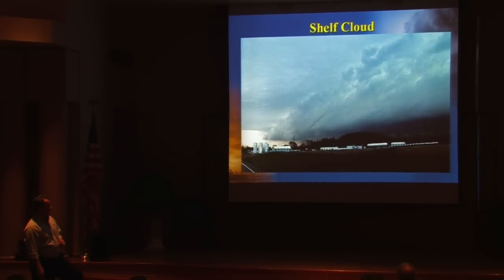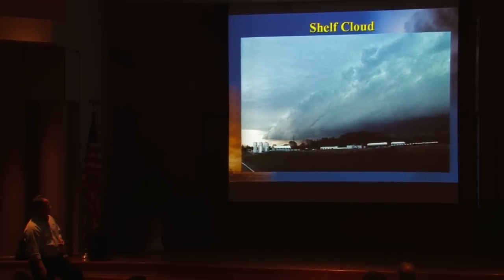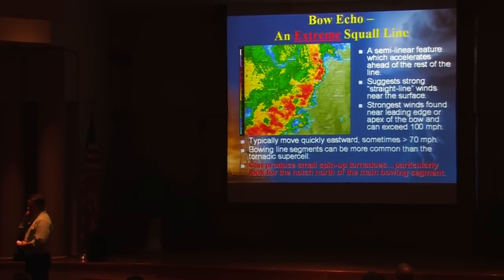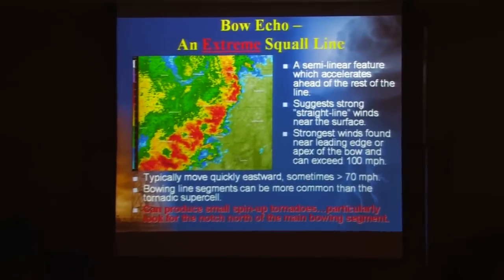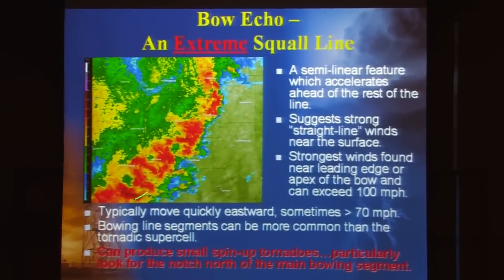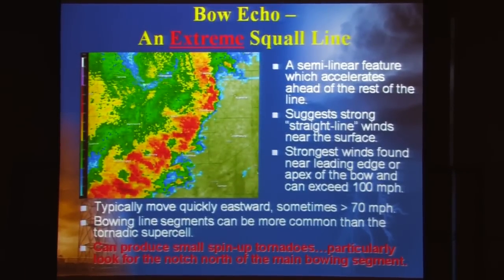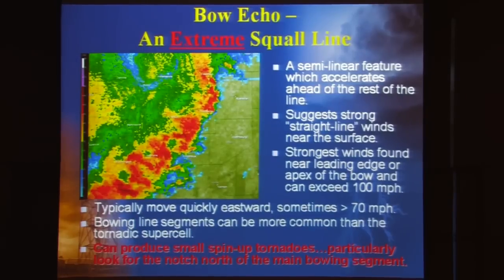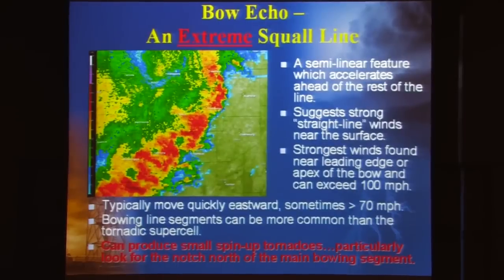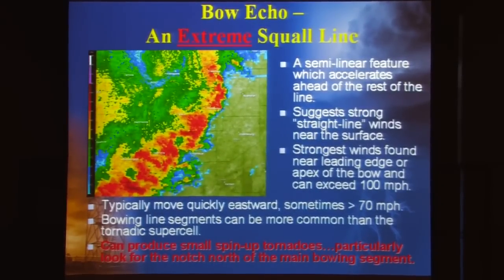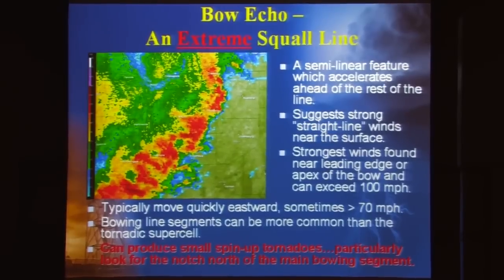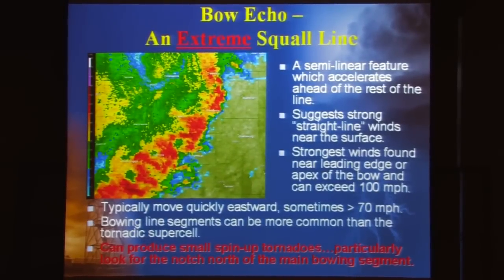Here we have one from Shelby County a few years ago — a very well-defined shelf cloud. In this particular case the precipitation might be just a wee bit behind at this location where the picture was taken. Looking at the radar image, this is what you'd normally see on the internet or television — the leading edge is where your most intense echoes are. Notice how this segment of the line has bowed outward relative to the rest — it's actually accelerated more quickly. That's an area where winds will be stronger, and where it's bowed out the most is where you tend to find your strongest straight-line winds. Just north of where it's bowing out the most is a potentially susceptible area for development of a small tornado.